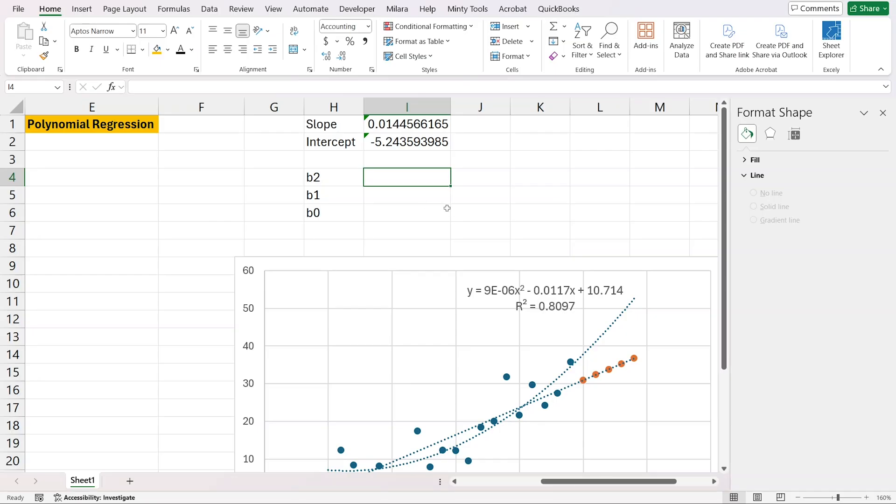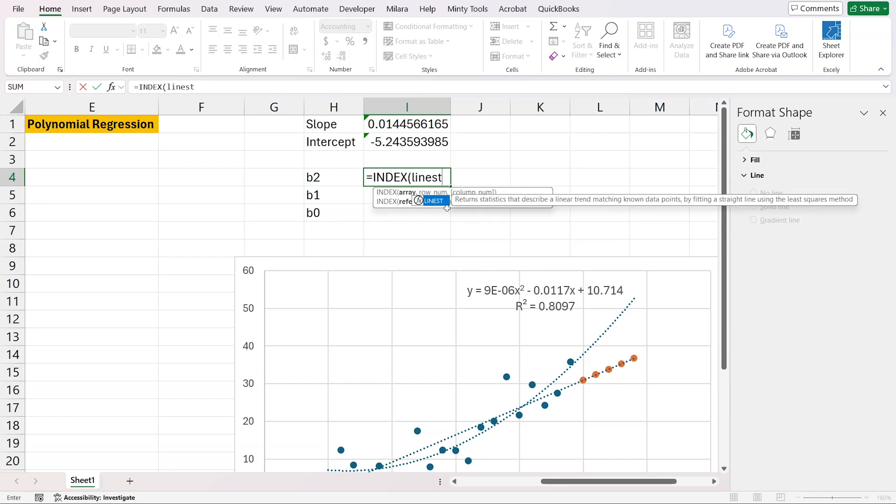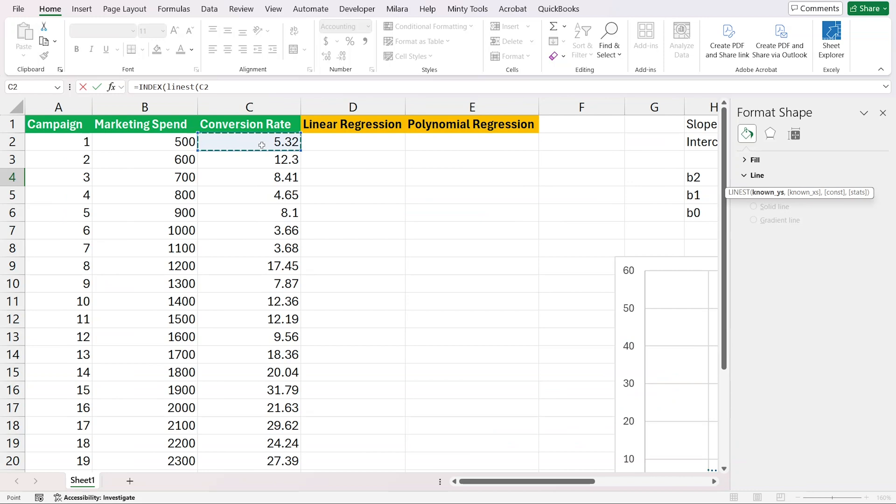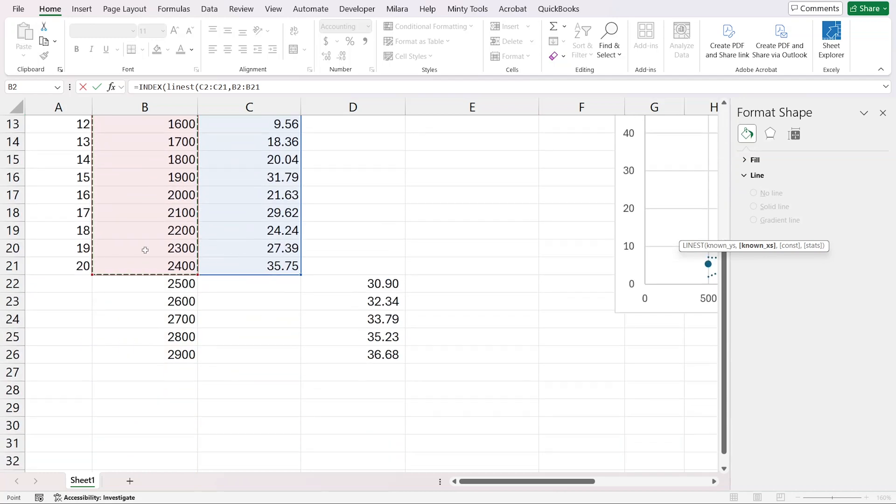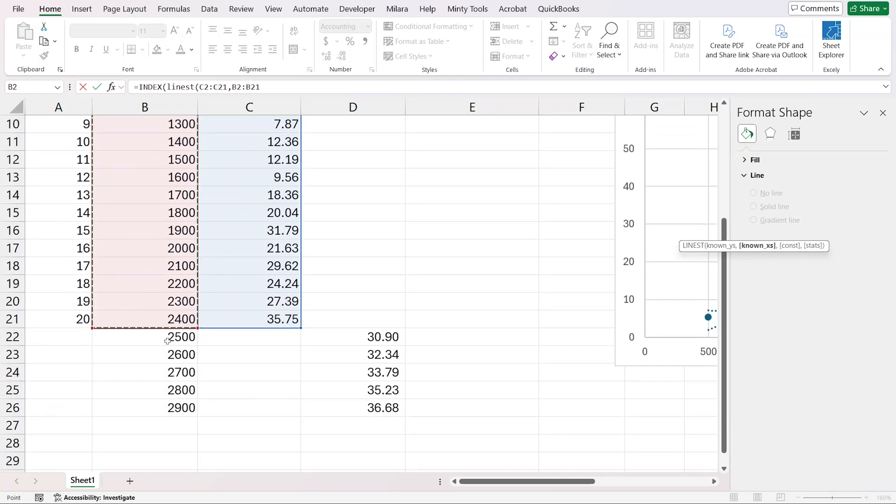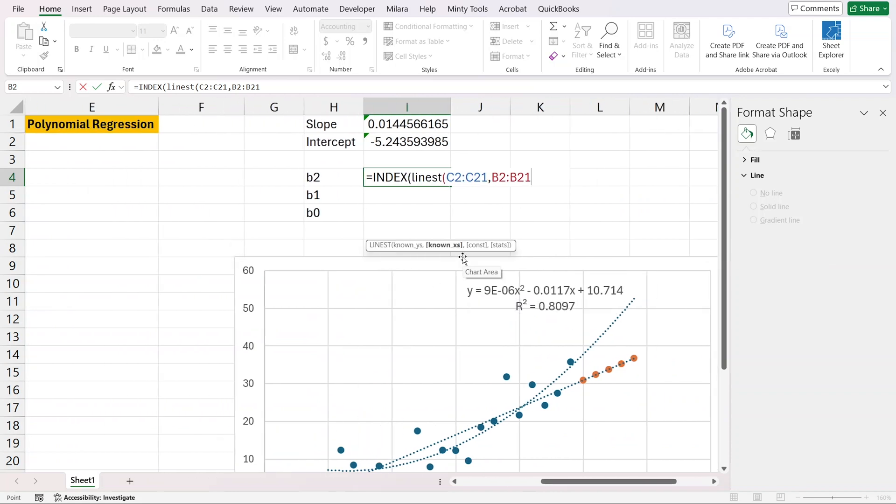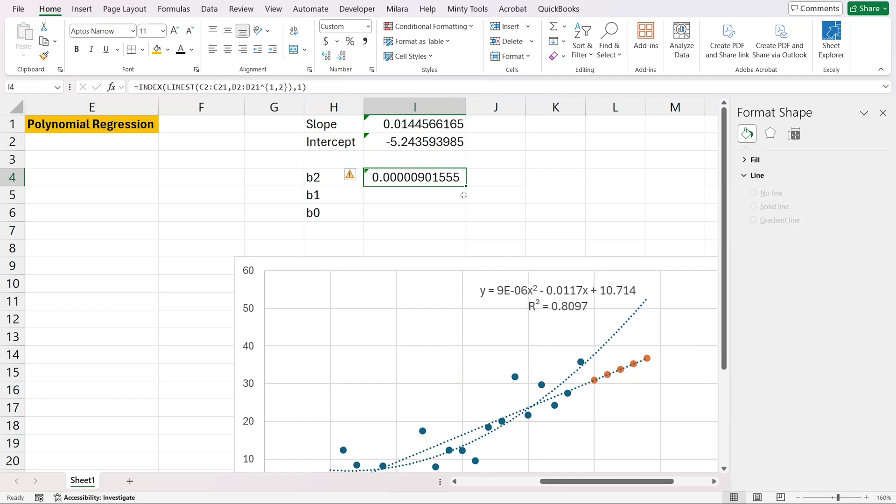I'm going to go back here and say this is index. Here I have the linest function. It takes my known y's, which are my conversion rates. It takes my known x's, which are those here. Keep in mind that we're only using the initial data. We're not using any predicted data here. Then I'm going to bring that to the power of one, two, as an array, close that. I'm going to take one, the row number, enter, and it shows us zeros. This is my B2.